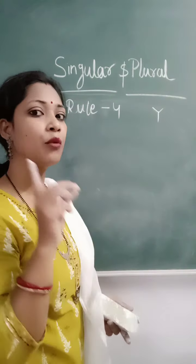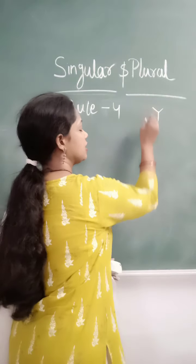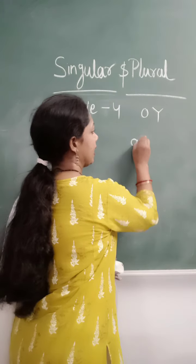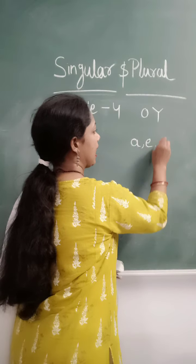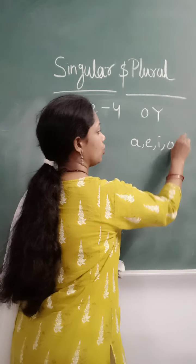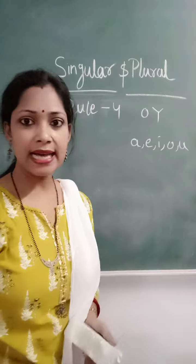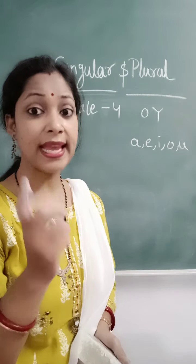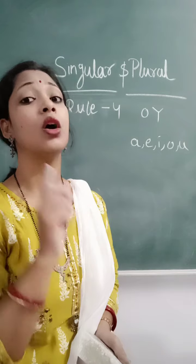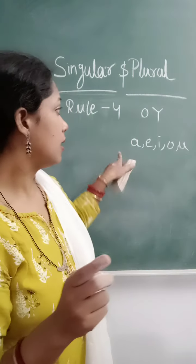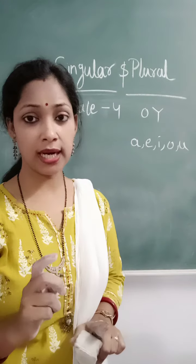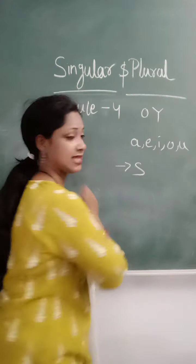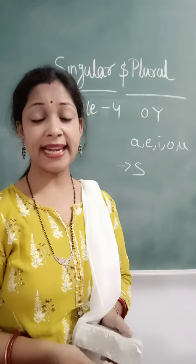And before that is a vowel. Vowels are A, E, I, O, U. If your last letter is Y and before that is a vowel — any one of these — then you will add S.